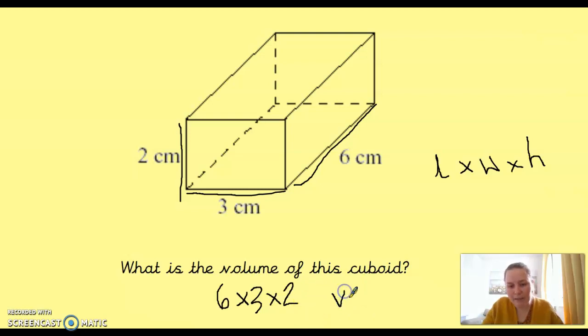So, our volume equals 36, and we've got our units, centimetres. And for volume, because we're going in that three dimension, we've got those three measures, we're going cubed, not squared, cubed. Okay, well done if you've got that answer.